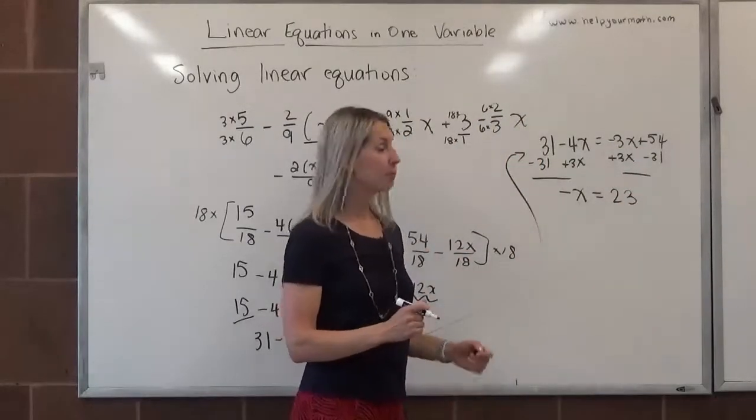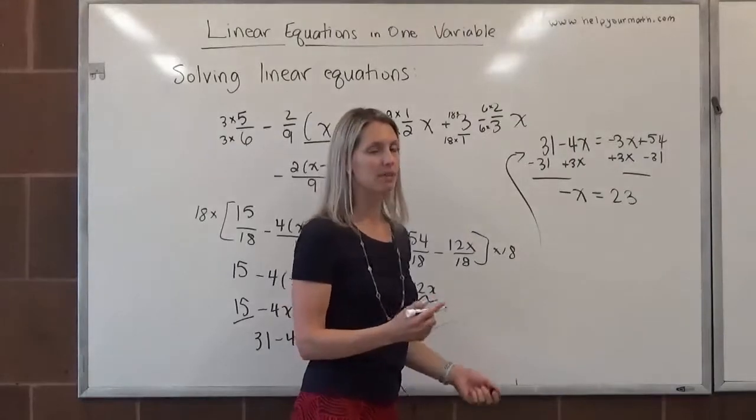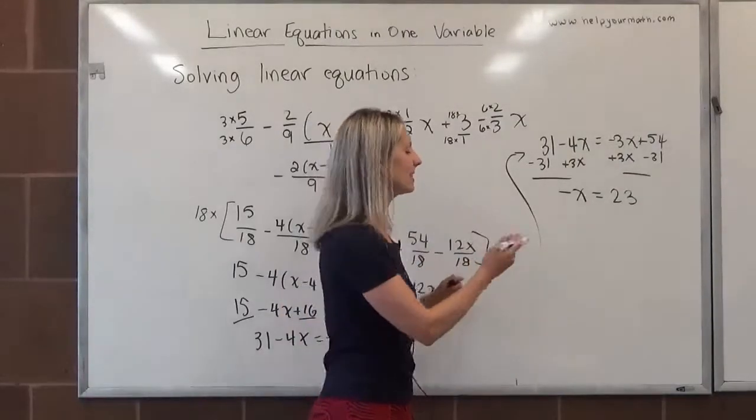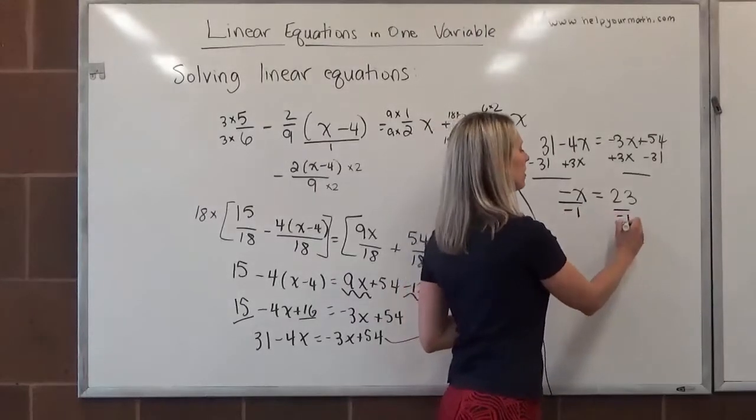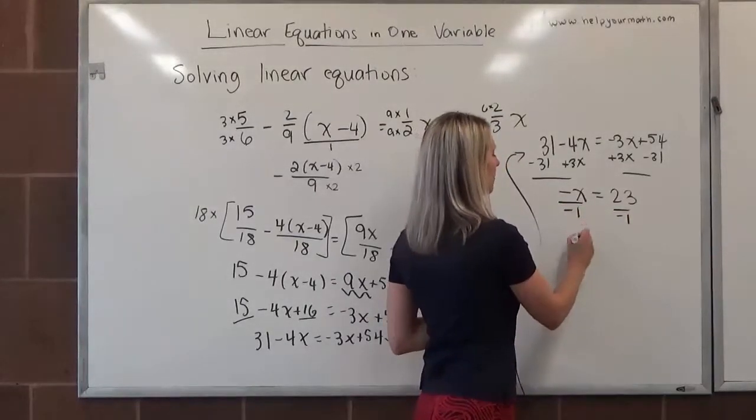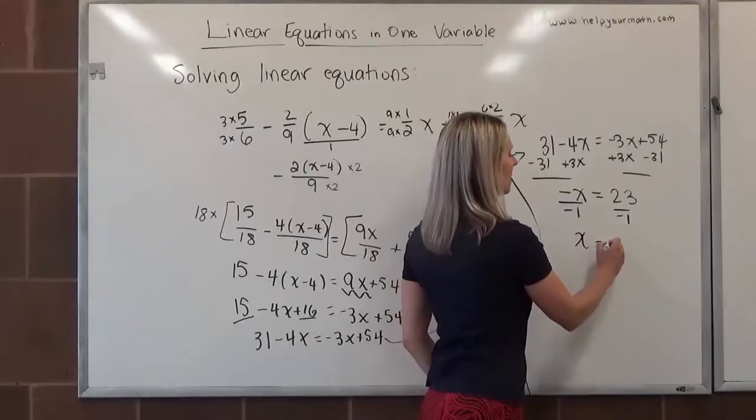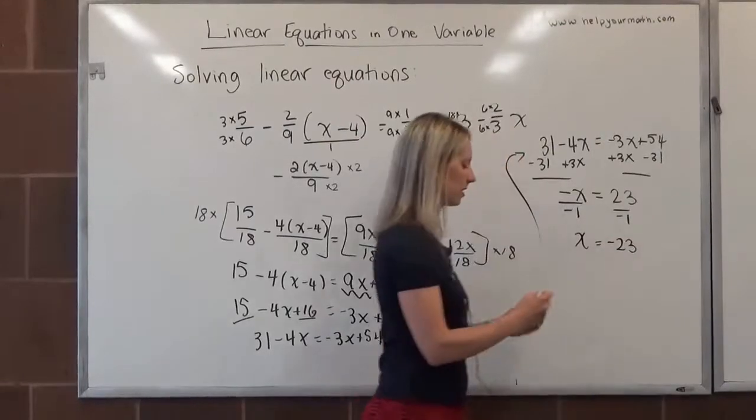To get x by itself, we need to divide or multiply both sides by negative 1. Just for consistency's sake, because we would consider this to be multiplication, I will divide by negative 1. Negative x divided by negative 1 is x, 23 divided by negative 1 is negative 23. So in the end, we end up with a nice integer solution, x equals negative 23.